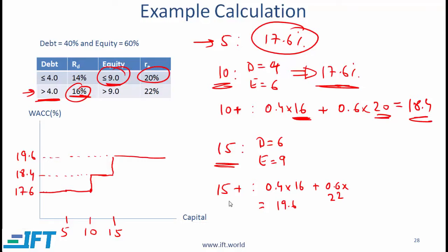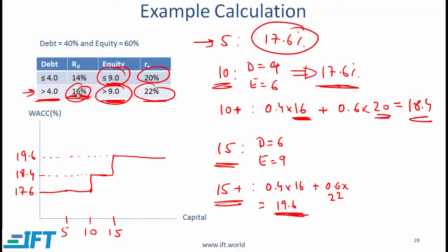But as we raise a little more than $15 million, the cost of debt remains the same since we are already in the higher tier, but equity will now exceed $9 million, moving into the higher category. The cost of equity then becomes 22%, and the overall WACC jumps up to 19.6%. Beyond $15 million, the WACC stays at 19.6% because we are in the higher category for both debt and equity.